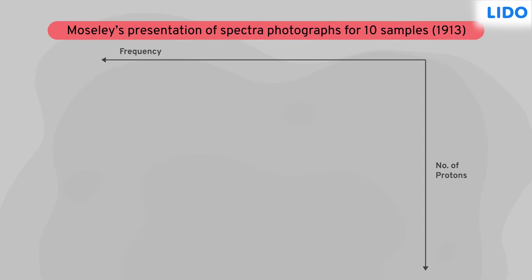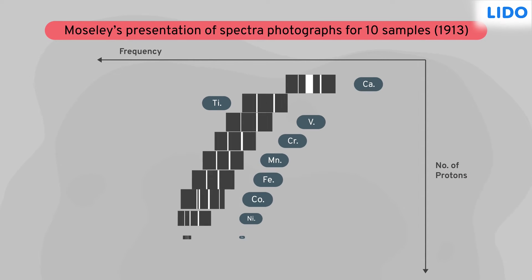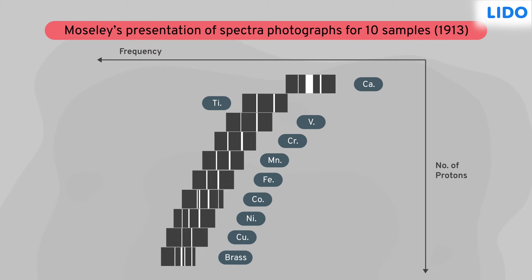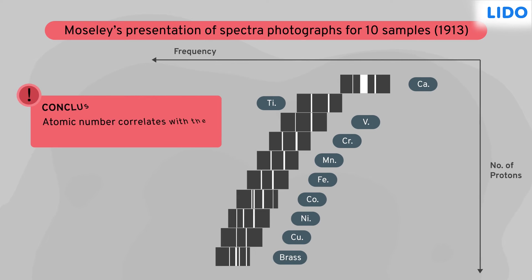The wavelengths were decreasing in a particular pattern. With these observations, he calculated the total number of protons in the nucleus of a particular element. Since he chose elements based on increasing atomic number, he concluded that the atomic number correlates with the number of protons in the nucleus.